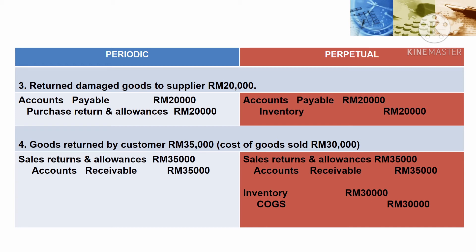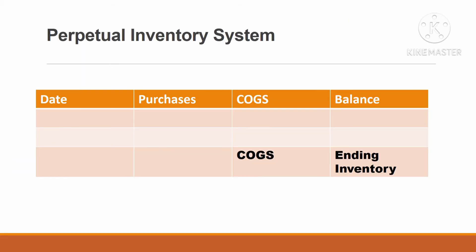This is the format for perpetual inventory system, where we record in a table showing the date, purchases, cost of goods sold, and balance. We record transactions in order starting with beginning inventory, then purchases and sales. At the end of the period, we can calculate cost of goods sold under the COGS column and ending inventory under the balance column.